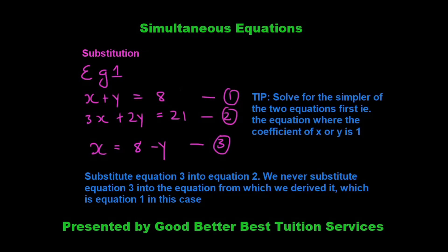Let's first discuss substitution. Here we are given two equations: x plus y is equal to 8, and 3x plus 2y is equal to 21, which we've labeled as equation 1 and equation 2.